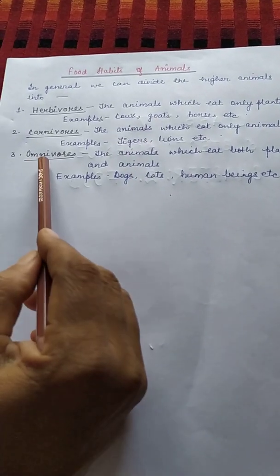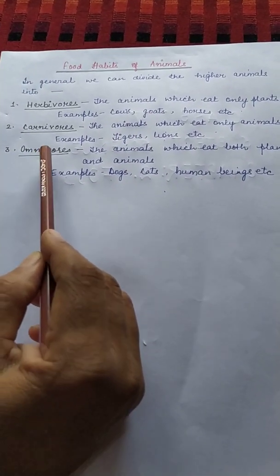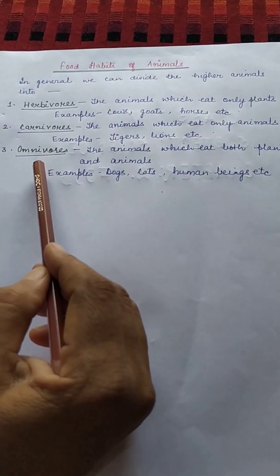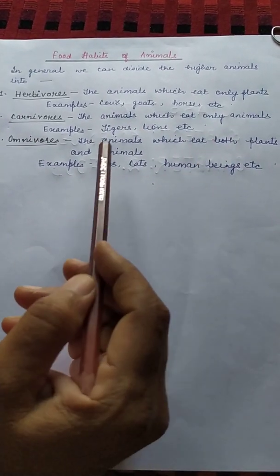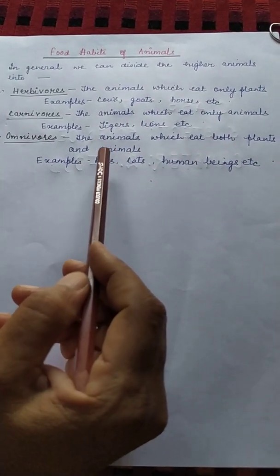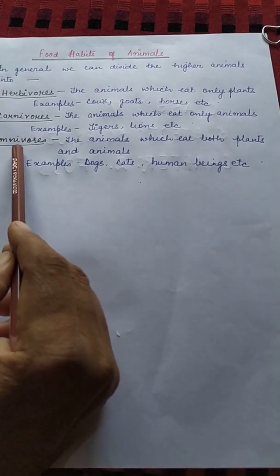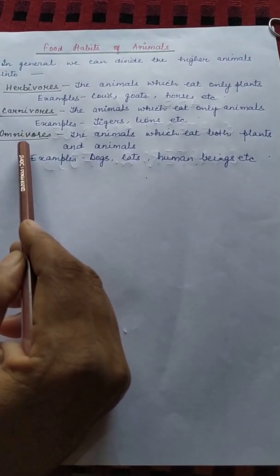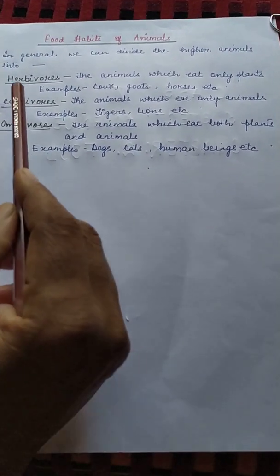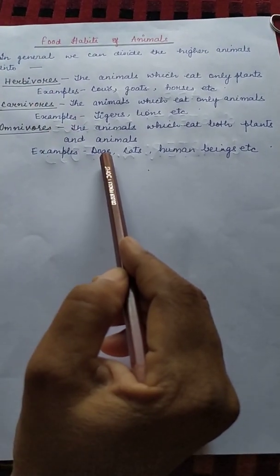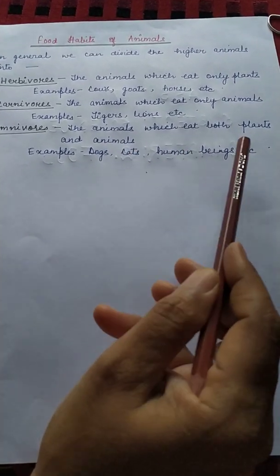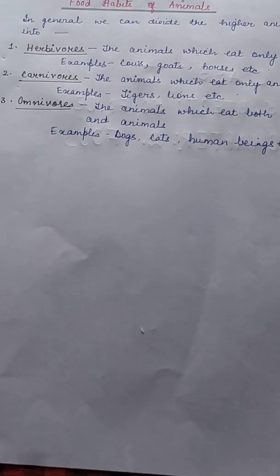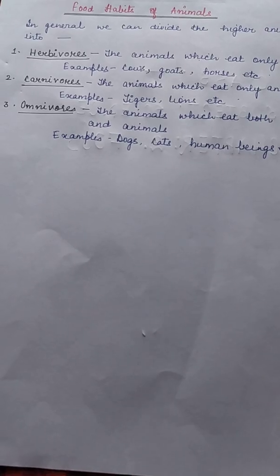Number three: Omnivores. The animals which eat both plants as well as animals are called omnivores or omnivorous animals. For example, dogs, cats, human beings, etc. That's all for today, children. Thank you.